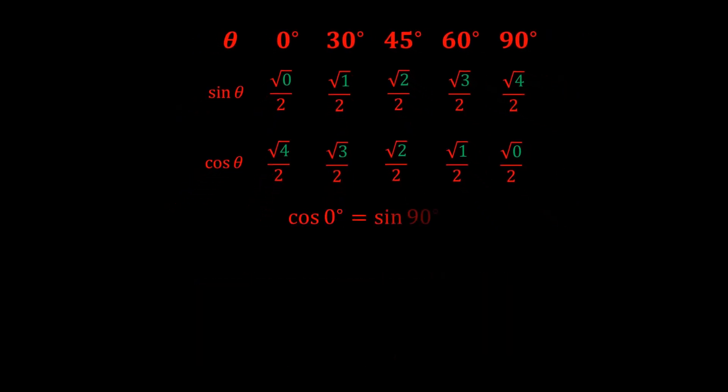So that means cos zero degrees is sine 90 degrees, cos 30 degrees is sine 60 degrees, etc.